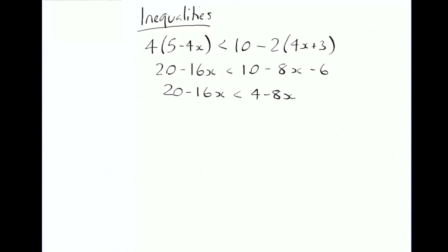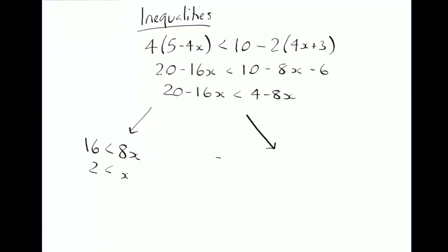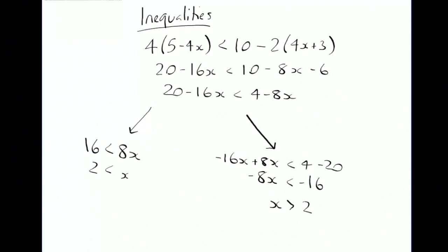We've got two ways we can do this. If we put all the x's onto the same side making the x's positive, we end up with 20 take away 4, so 16 is less than 8x, which tells you that x is greater than 2. Or we can put them onto the other side: minus 16 plus 8x is less than 4 minus 20, giving minus 8x is less than minus 16, which also tells you that x is greater than 2. The reason for that is when you divide by a negative you have to flip your inequality sign around.